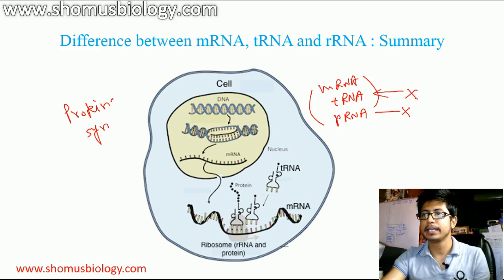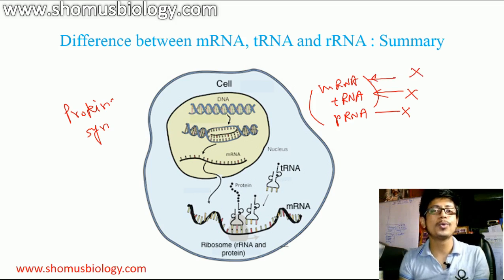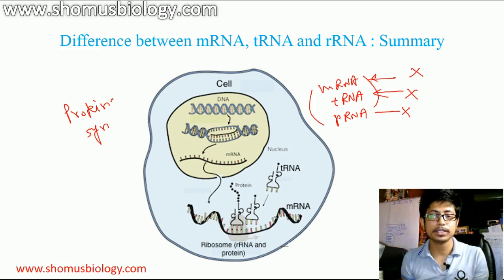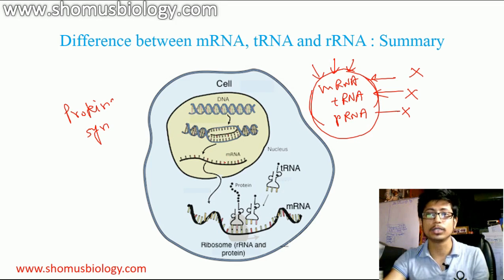If there is no tRNA, there will be no carrier for amino acids, so protein synthesis will not be possible. If there is no mRNA, there is no codon to read — no transcript, no instructions to make anything. Every type of RNA has its own importance, and they all work together inside the cell.